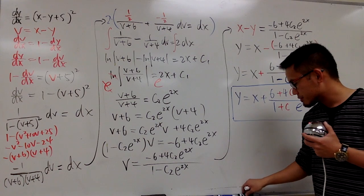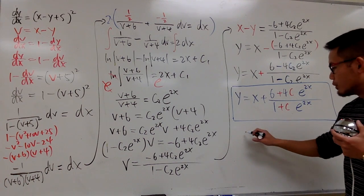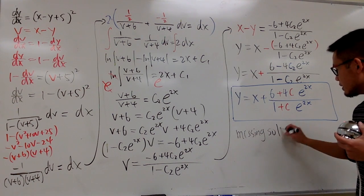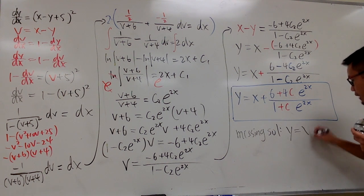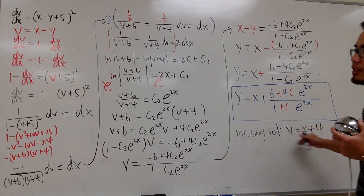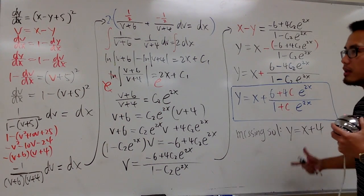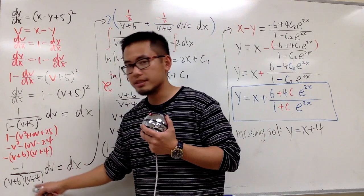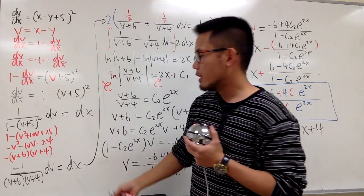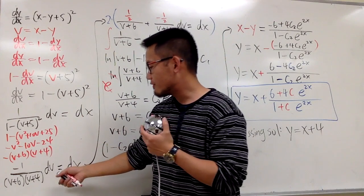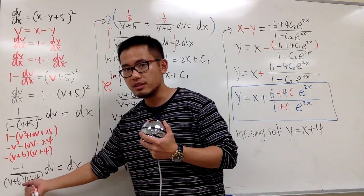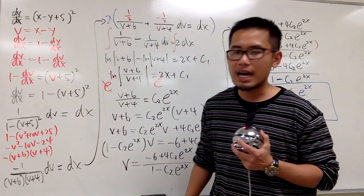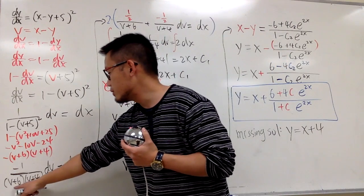We also have a missing solution. Whenever you divide by a function in the denominator while solving a differential equation, set each factor equal to zero to check for missing solutions. In this case, we check v + 6 = 0 and v + 4 = 0.